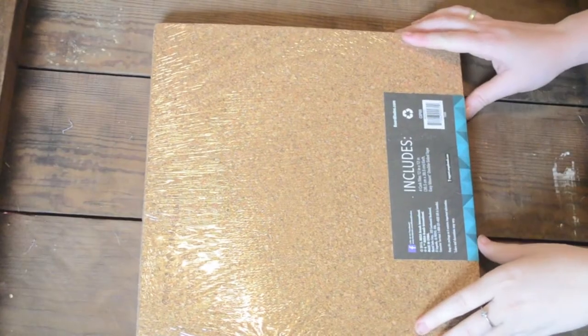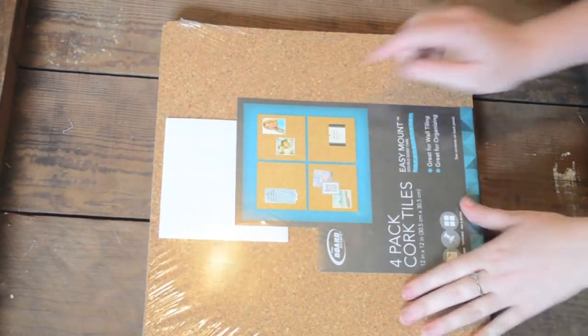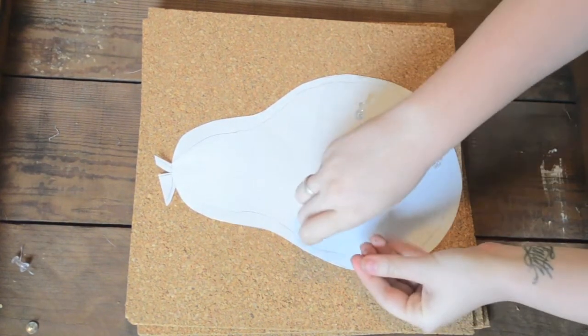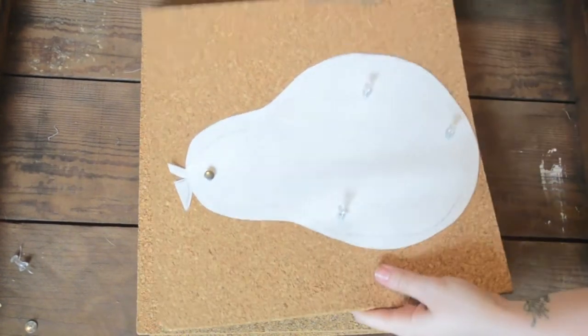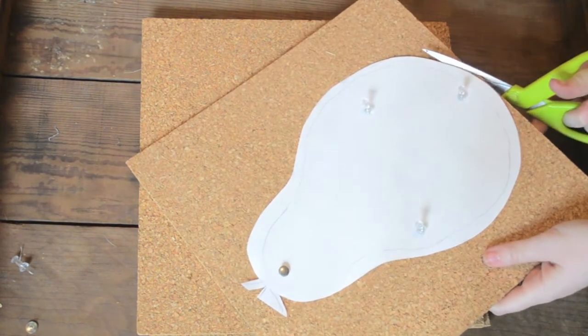For this cork board fruit project, I am going to use some cork board that I got from Joann's for four dollars. Next, taking a stencil that I drew of a pear, I stuck it down with some pins just so the paper would stay in place as I cut around it.